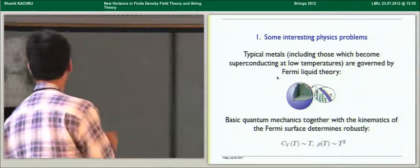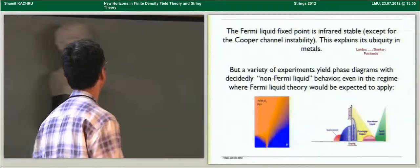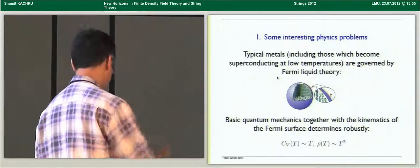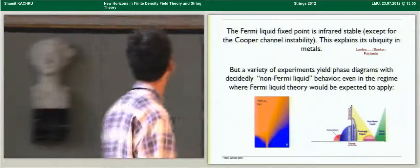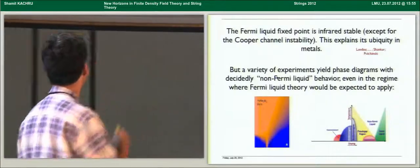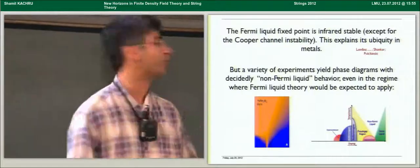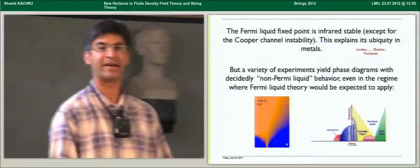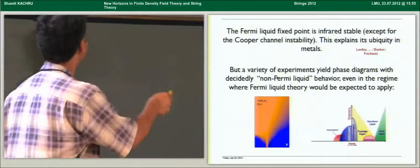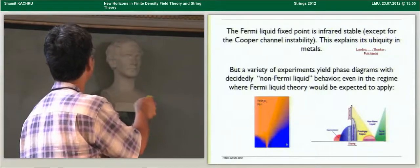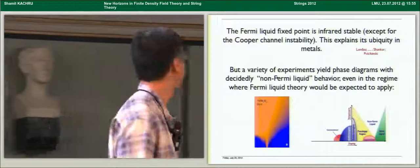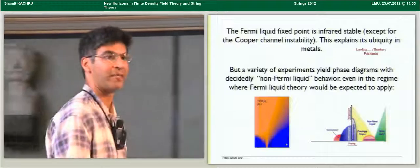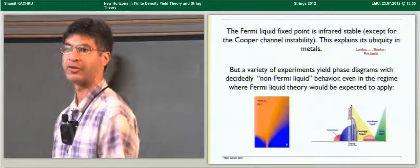And maybe it's a surprise, but this works remarkably well for many metals. Now, the fixed point, which comes about when you take this picture and make it into a quantum field theory, that was first done relatively late by Shankar and Polchinsky and others, has a Fermi liquid fixed point, which is an infrared stable fixed point. That's not quite true, there's some marginal perturbations corresponding to the so-called Landau parameters, and in some cases there's one marginally relevant perturbation corresponding to the Cooper channel instability generated by phonon exchange, but basically it's an infrared stable fixed point, and that's what explains its ubiquity in real-world metals. And that, presumably, is why this picture has had so much success.